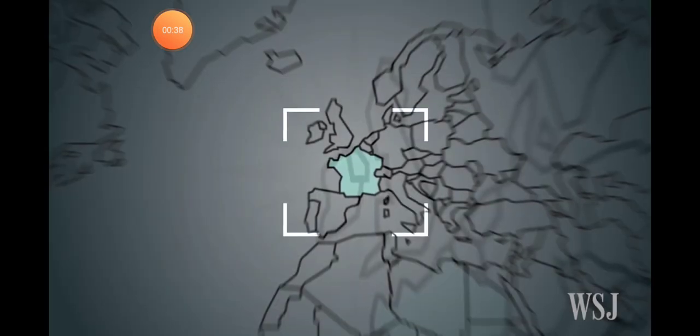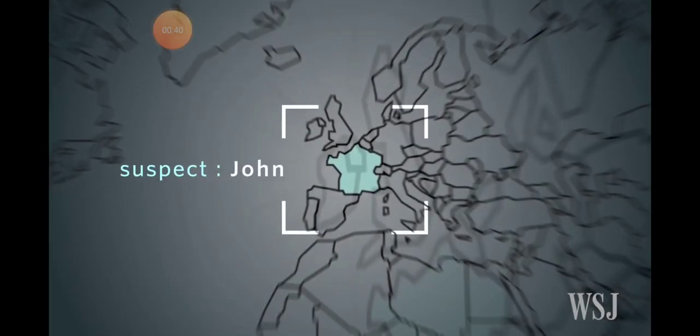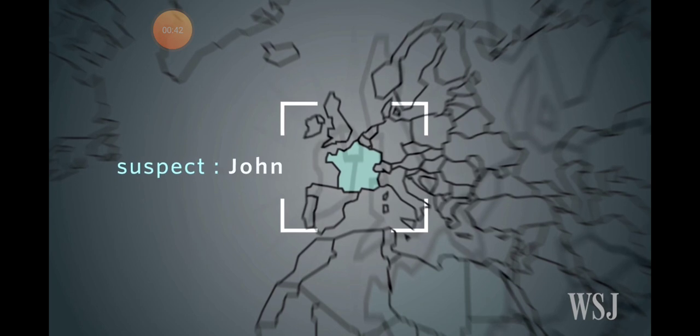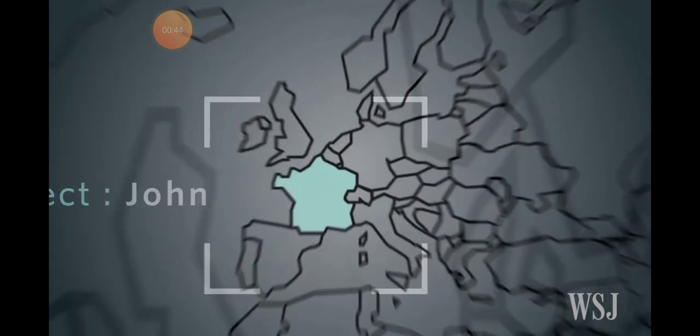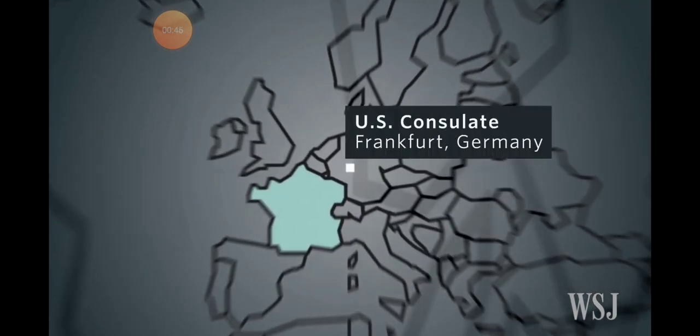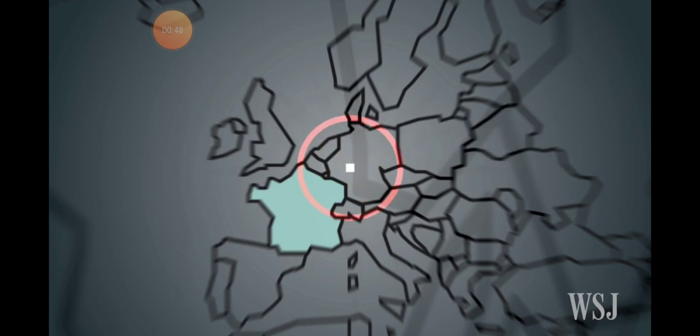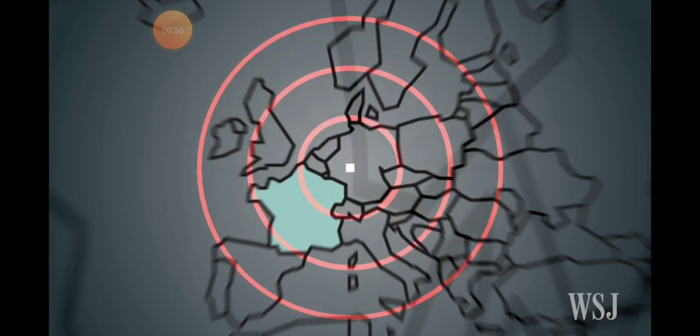Say CIA operatives are investigating a suspect in France we'll call John. According to the leaks, CIA hackers operate out of the U.S. consulate in Frankfurt, Germany, using it as a base to cover Europe, the Middle East, and Africa.